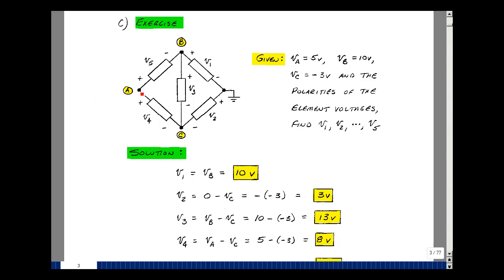Element four here would be node voltage a, minus node voltage c. Node voltage a was 5, node voltage c was minus 3, and that would give me 8 volts.